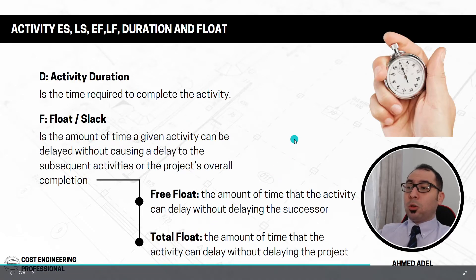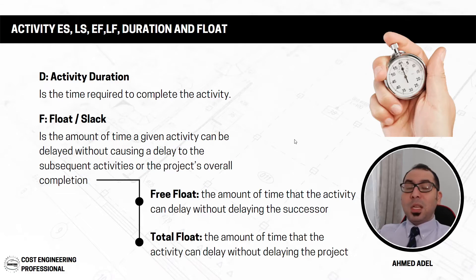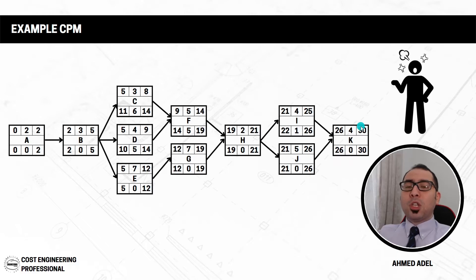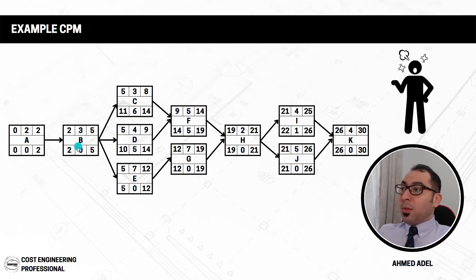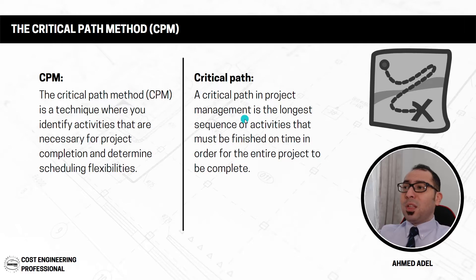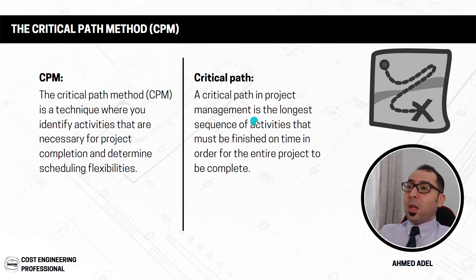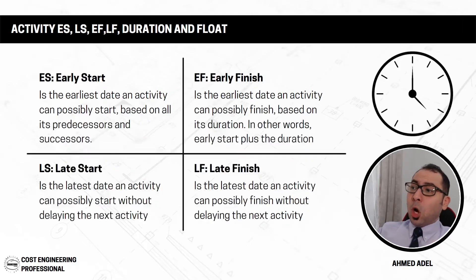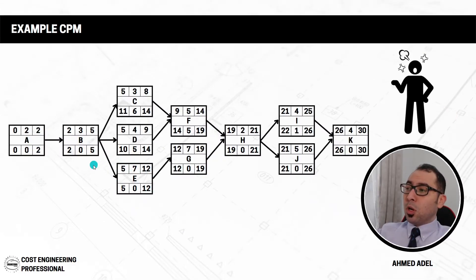Since the early start equals the late start (both are 2) and the early finish equals the late finish (both are 5), the total float for activity B is zero. A total float of zero means that if this activity is delayed by one day, the project will finish one day late — instead of finishing in 30 days it would finish in 31. This means activity B is a critical activity.